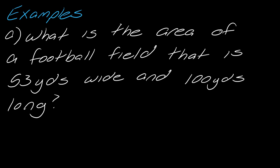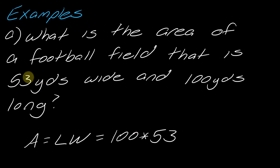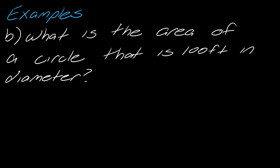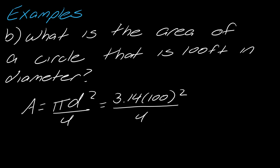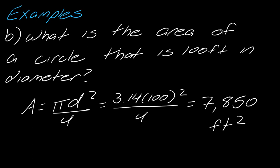Let's do a few examples. What is the area of a football field that is 53 yards wide and 100 yards long? Area equals L times W: 100 times 53 equals 5,300 yards squared. Next: what is the area of a circle that is 100 feet in diameter? Using pi·d² divided by four: 3.14 times 100 squared divided by 4 gives 7,850 feet squared.